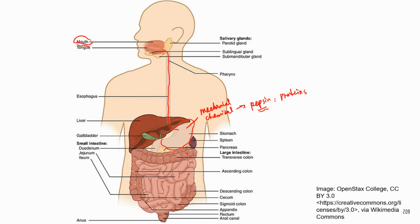After the stomach, food enters the small intestine, which is divided into three sections. Upon leaving the stomach, food travels first through the duodenum, then the jejunum, and finally the ileum. After the small intestine, food moves to the large intestine, shown here in a darker color.